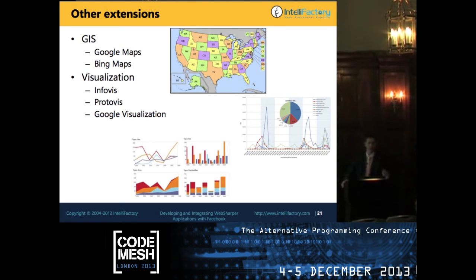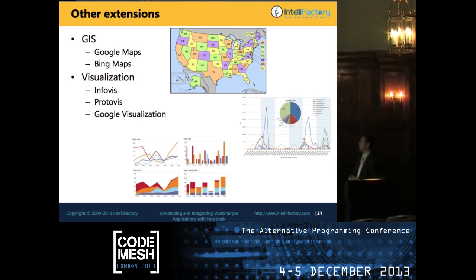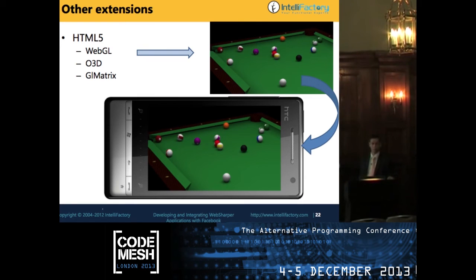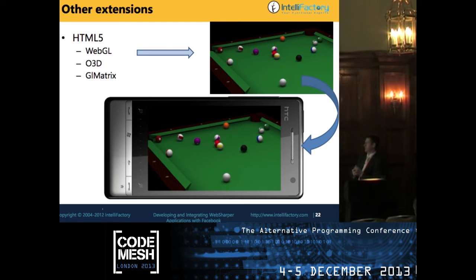Just to wrap up on extensions: we have a few dozen different extensions — for GIS, data visualization, HTML5, and so on. All these different JavaScript libraries can be used with F# code, giving you charts, maps with markers, full HTML5 support, and libraries like WebGL, O3D, and GLMatrix. We transcribed a Google snooker game application into F# using WebSharper — about 1,000-1,300 lines — and the code went down nearly half by restructuring it more functionally.